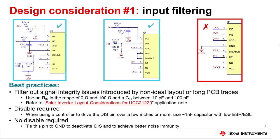All inputs need to be properly filtered. Improper input filtering can lead to a variety of undesirable effects, including unwanted electromagnetic interference being introduced into the system. Furthermore, non-ideal layout or long PCB traces can cause signal integrity issues to the inputs resulting from inductances in the input signal loop or coupled noise from the power stage. This can result in noise being injected to the internal circuitry, resulting in reduced overall system efficiency.